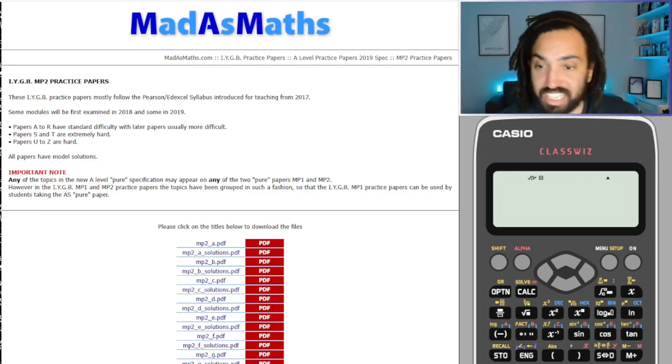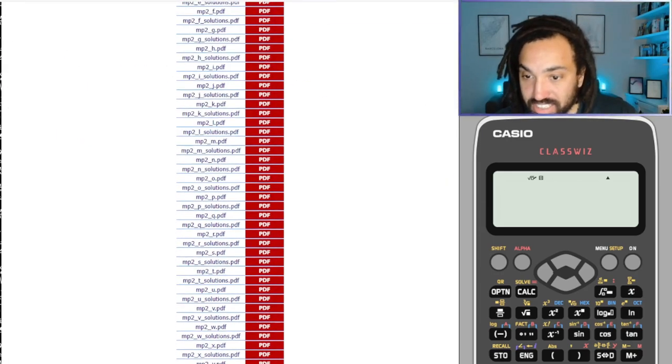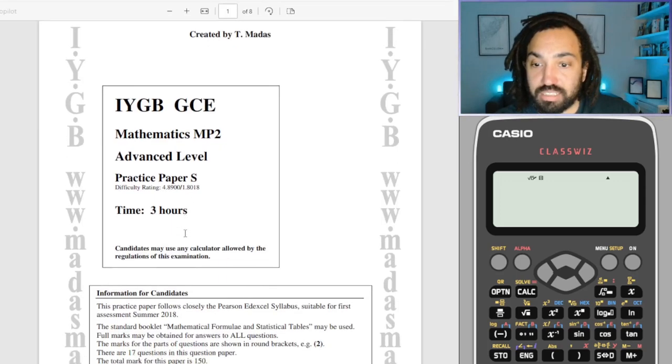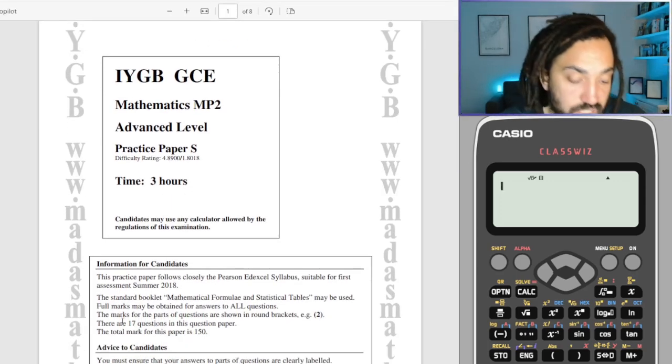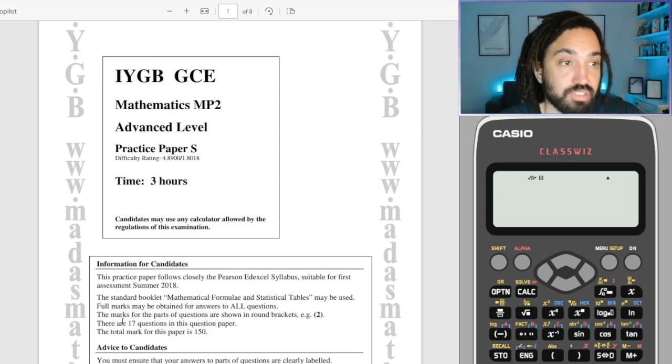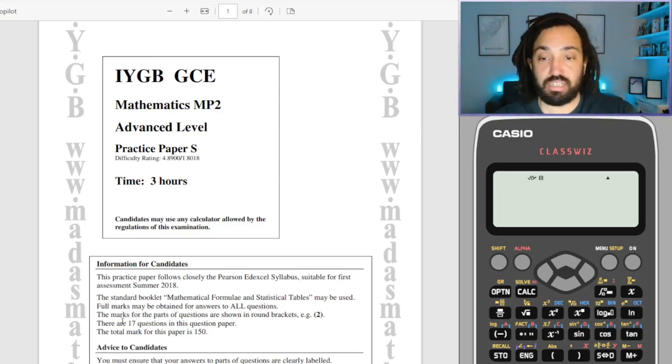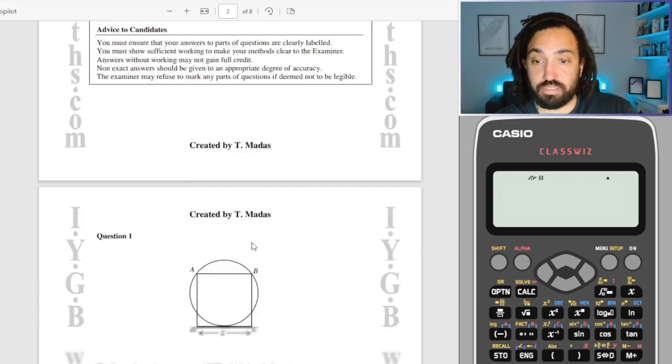Okay, let's go down to S. Thanks Siri. And there are 17 questions in this paper. Siri, give me a random number between 1 and 17. It's 2. Okay right, let's go down then to number 2.